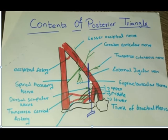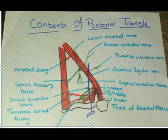First let us discuss the contents of the occipital triangle. As you can see in the diagram, the spinal accessory nerve emerges a little above the middle of the sternocleidomastoid muscle, then it descends laterally, pierces the deep fascia, and finally disappears behind the anterior border of the trapezius muscle.